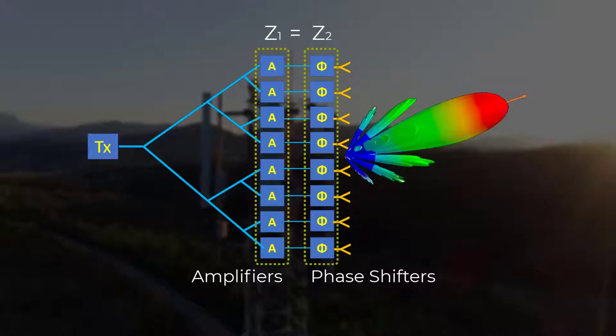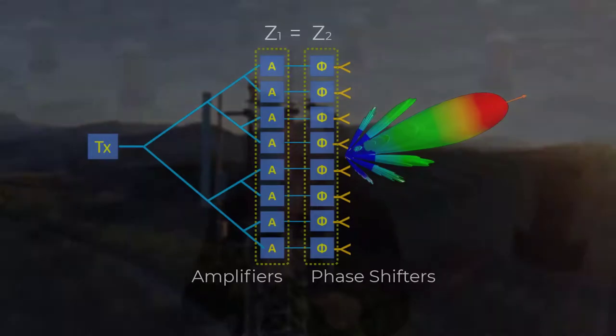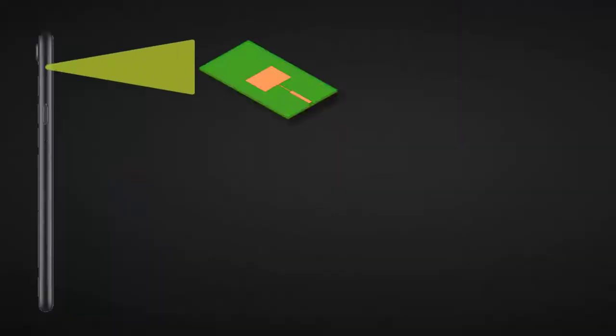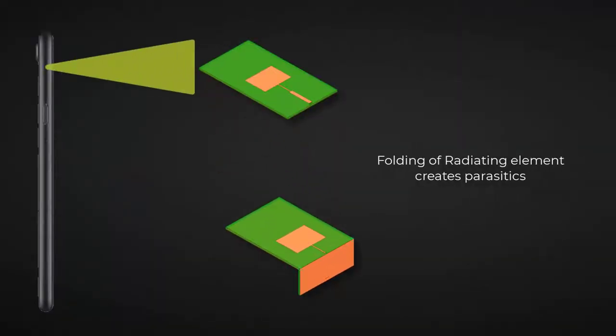We need to consider impedance and load. The load can be from different elements or from a physical change of the element. That antenna probably needs to be attached to some small device, such as the sidewall of the smartphone. The folding of this device can also create other parasitics. Let's take a look at this scenario.